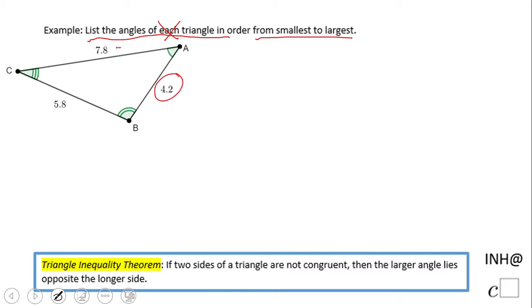So for that reason we're going to use this Triangle Inequality Theorem, another one which says if two sides of the triangle are not congruent, then the larger angles lie opposite to the longer side. That's what it says.